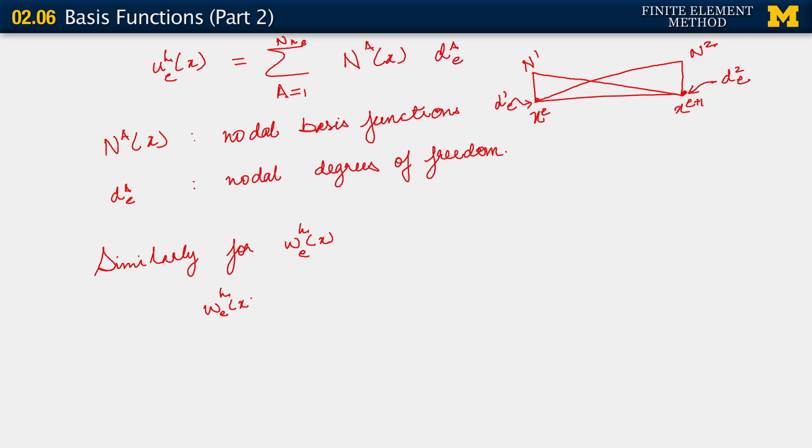w_h of e, x equals summation a going from 1 to number of nodes in the element, which in this case because we're looking at the simplest possible finite element formulation, that number of nodes in the element is 2. We have N^a function of position.